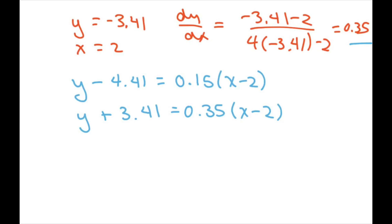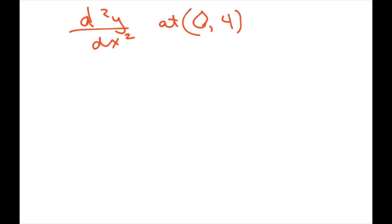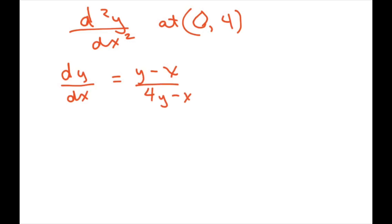This part is worth three points: one for finding the y-coordinates, one for the correct slopes, and one for the correct lines. Now for the last part, we find the second derivative of y with respect to x at (0, 4). Once we have the first derivative, we differentiate again using the quotient rule. We have dy/dx equals (y minus x) divided by (4y minus x), so we apply the quotient rule to find d²y/dx².